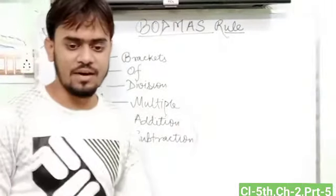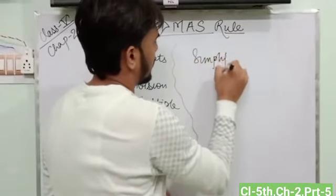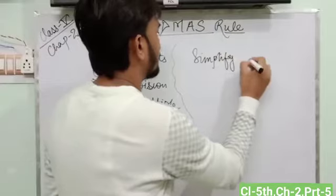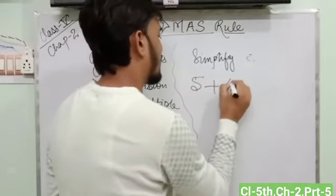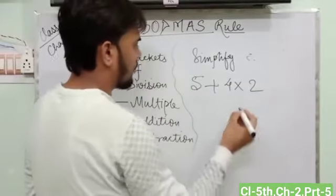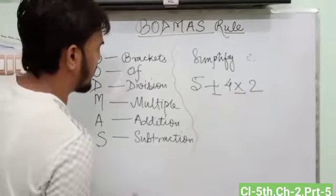If we have any number, simplify 5 plus 4 into 2. Then first of all, we have to see here. There are two operations, multiple and addition. Multiple is first before addition.